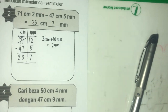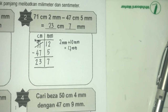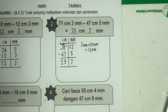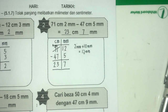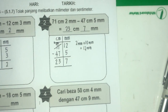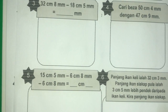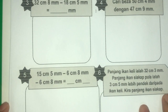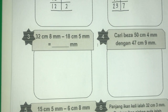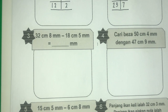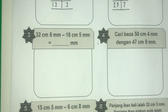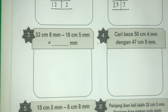Cikgu adjust kejap. Seterusnya kita pergi dengan soalan yang ketiga. Soalan yang ketiga ialah 32 cm 8 mm tolak 18 cm 5 mm.